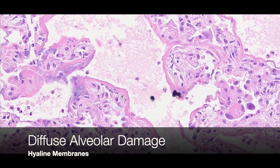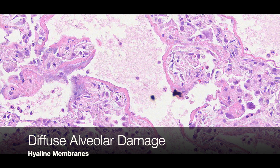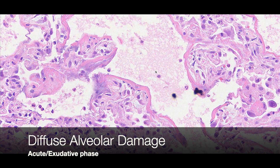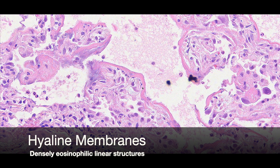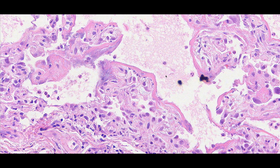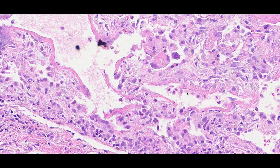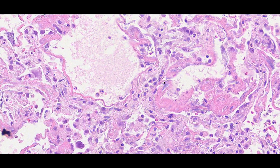Zooming in, we can see the hyaline membranes quite nicely. Hyaline membranes are the major hallmark of the acute or exudative phase of diffuse alveolar damage. As you can see, they are thick, densely eosinophilic material lining the alveolar walls in these linear structures. I was taught that it looks like someone took a tube of pink toothpaste and smeared it inside the alveoli — I think that's a really good way of understanding it. There are several nice hyaline membranes visible here.